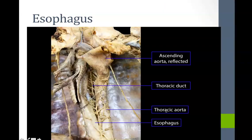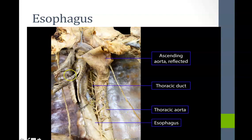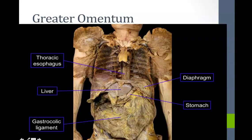This is a cadaveric view of what your esophagus would look like. The trachea has been moved a little bit laterally so we can see the full extent of the esophagus, and you can really see the striated muscle when you're in the lab.